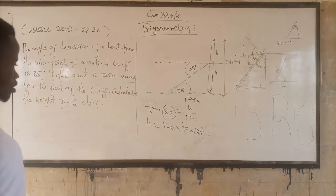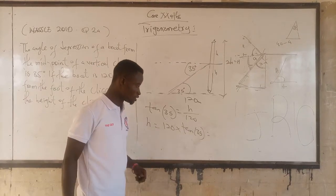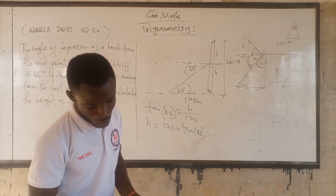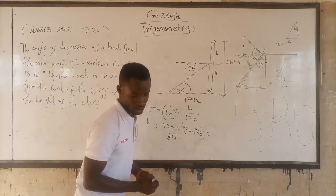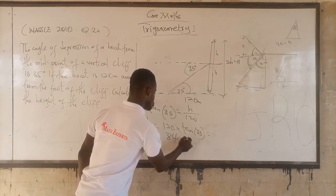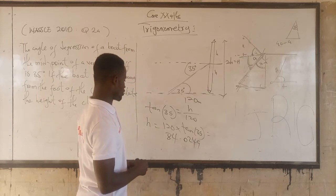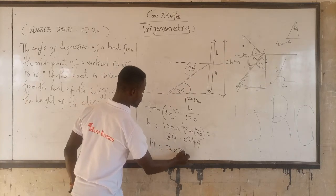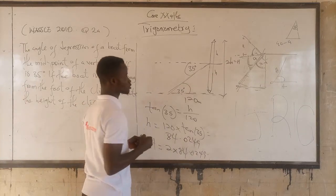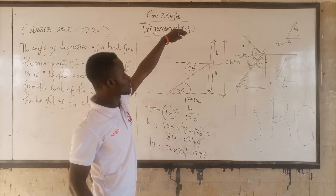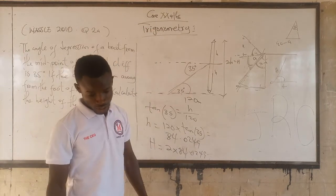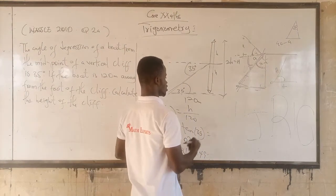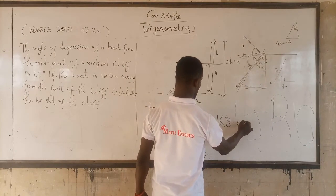And let's assume you don't want to use alternate angles but want to use the other method. So now, 120 times tan 35 is going to give you 84.0249. So to find the height of the cliff, it will be 2 times 84.0249. That's going to be the height of the cliff. So your final answer is going to be 168.05 meters.